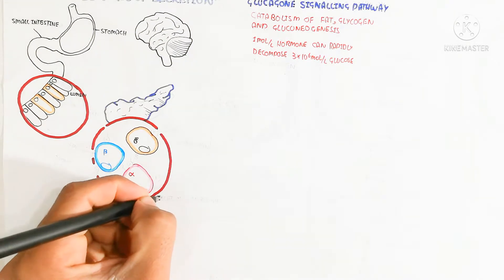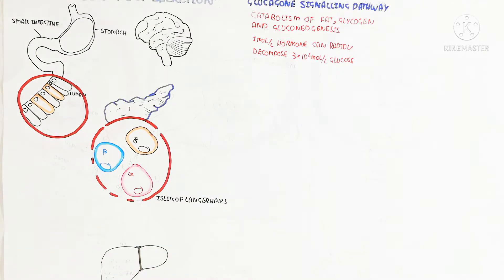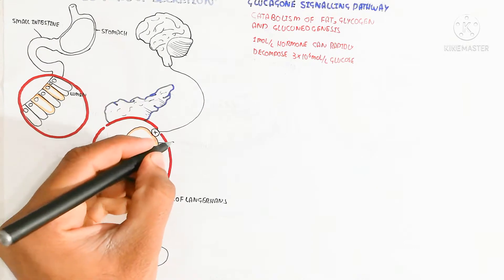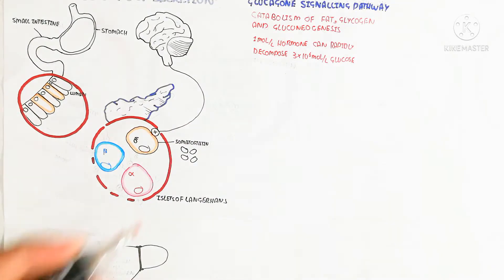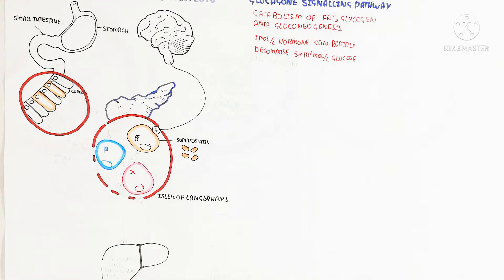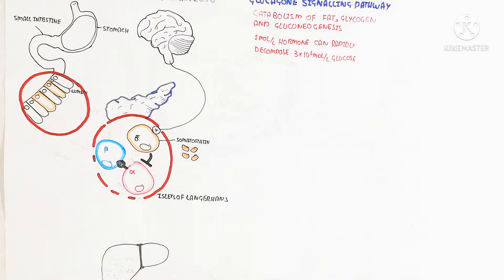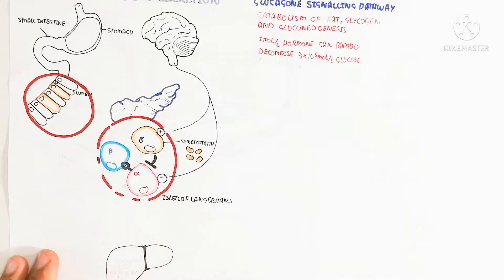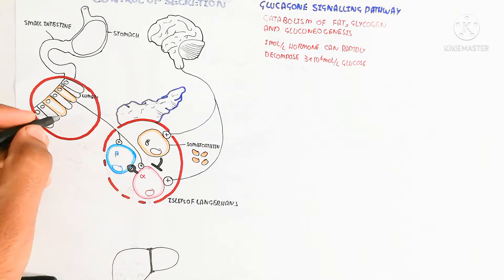The enteroendocrine cells will produce GIP and GLP-1. The vagal nerve, due to the sympathetic or parasympathetic nervous system response, will target somatostatin release from the delta cell. Somatostatin will then inhibit the alpha cell, and inhibition of the alpha cell will promote the beta cell to produce insulin.